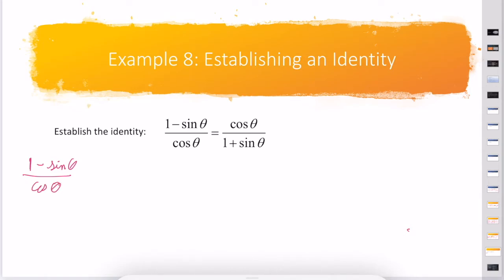I have 1 minus sin θ over cos θ. What I'm going to do is multiply this by a very strategic 1, multiplying by 1 plus sin θ over 1 plus sin θ.